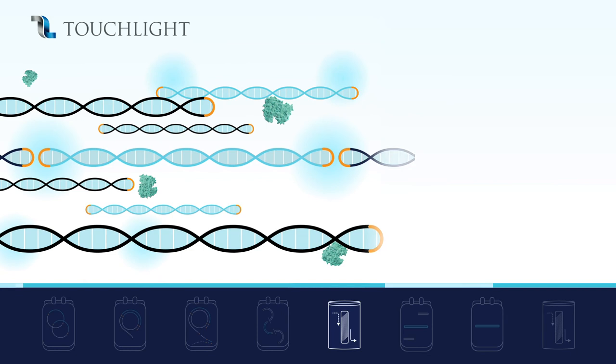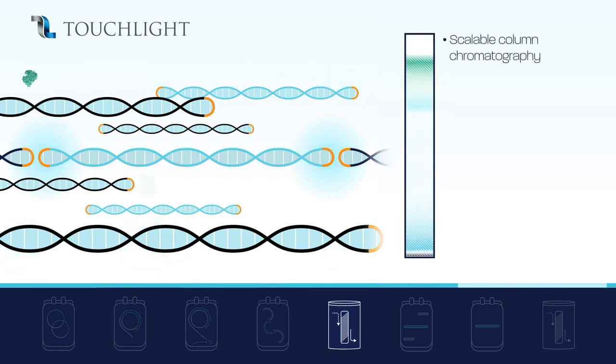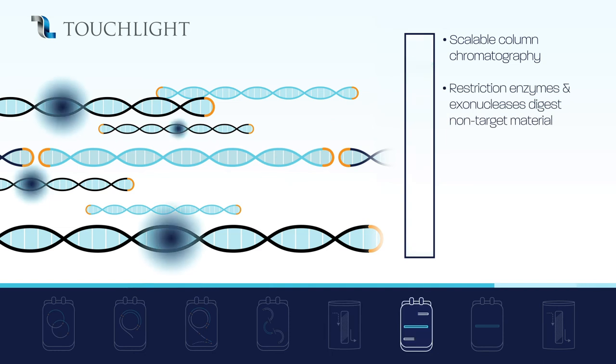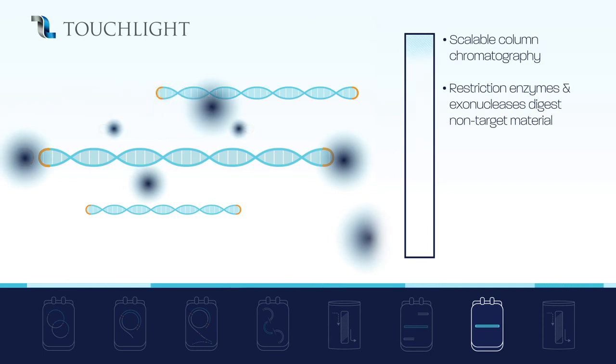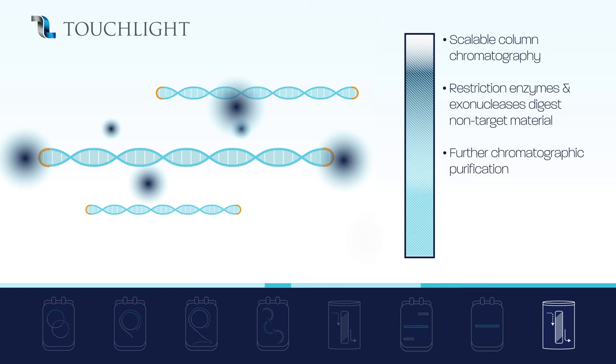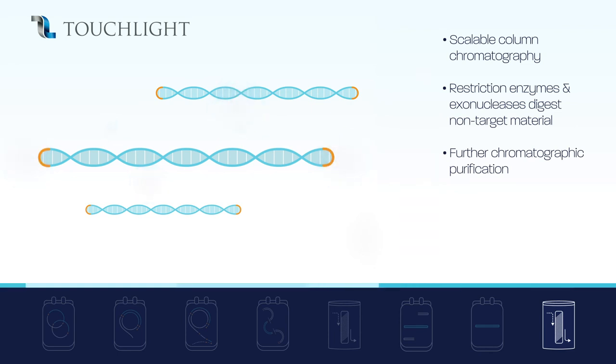Purification is performed using scalable column chromatography, eliminating enzyme impurities. Restriction enzymes and exonucleases selectively digest and degrade the non-target backbone sequences, leaving the dbDNA intact. Further, chromatographic purification removes impurities including nucleotides and processing enzymes.